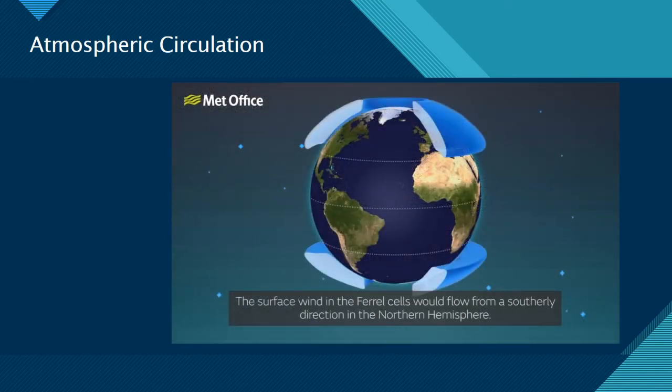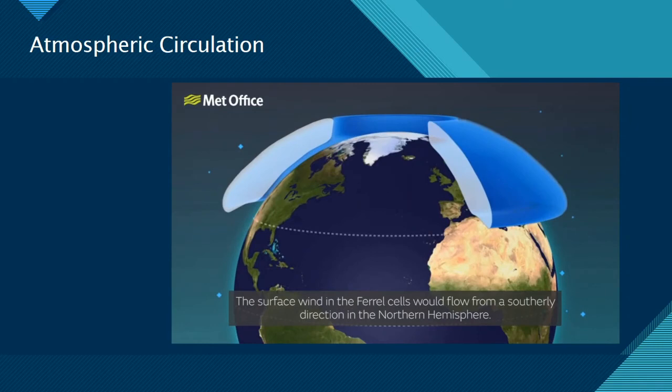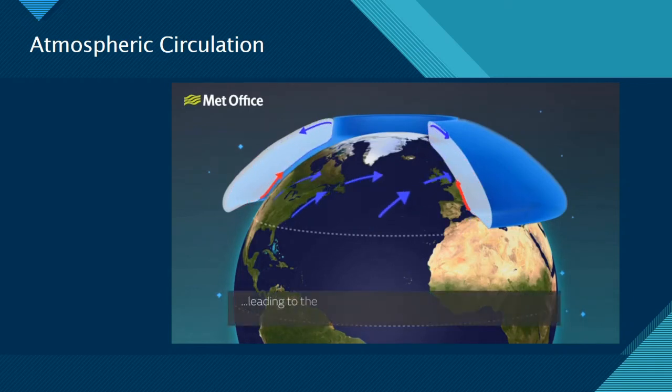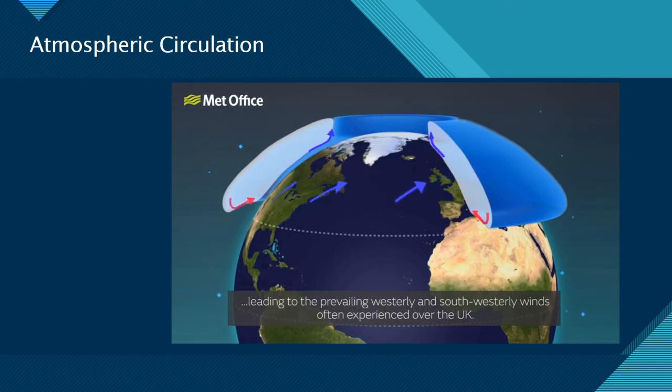The surface wind in the feral cells would flow from a southerly direction in the northern hemisphere. But the Coriolis effect causes this wind to be deflected to the right, leading to the prevailing westerly and southwesterly winds often experienced over the UK.